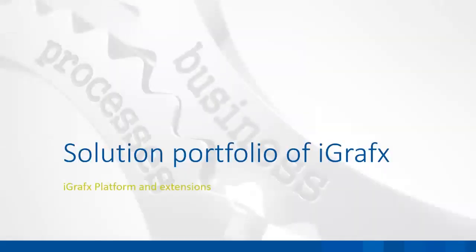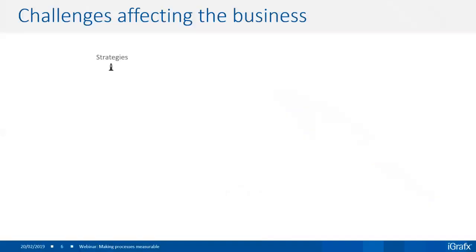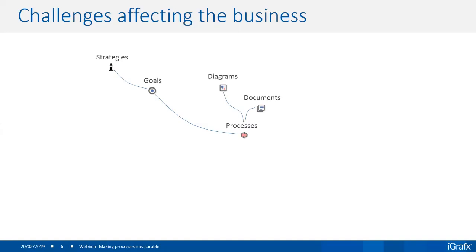Speaking about the solution portfolio of iGraphics, let me start with the different challenges affecting a business — which may also be your challenges. Normally we have a strategy or different strategies, and strategies are derived into certain goals. Goals can then be linked back to our processes. Processes can either be described in diagrams or documents, or they may not yet be documented — but still, processes are present in the company.